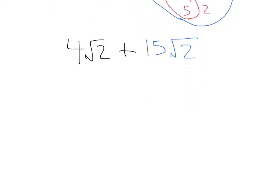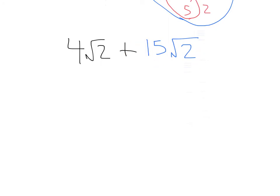Now we do have like terms: four square root of two plus fifteen square root of two. That's going to leave us with nineteen square root of two — four plus fifteen is nineteen.